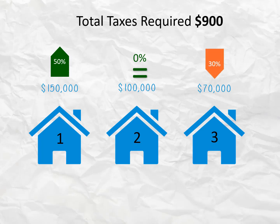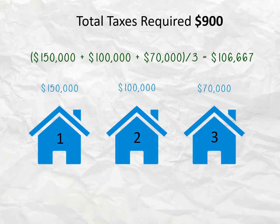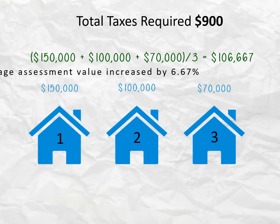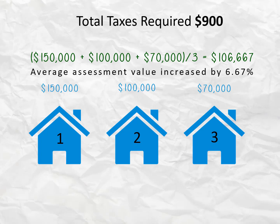In this scenario, the overall average assessment value increased to $106,667, or 6.67 percent. Because of this change, a new tax rate must be calculated: $900 divided by the combined assessed value of all three properties, equaling .0028125 dollars.